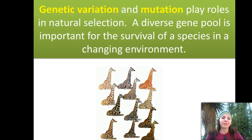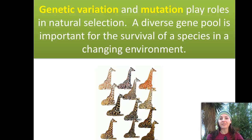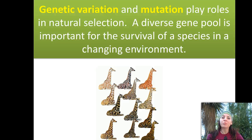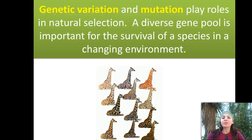First of all, we're going to talk about genetic variation. Genetic variation and mutation play roles in natural selection, and natural selection, if you recall, is the main driving force or the main mechanism of evolution. A diverse gene pool is important for the survival of a species in a changing environment — we want a lot of genes contributed to that gene pool, not just a few traits to pick from. We want green eyes and brown eyes and blue eyes and gray eyes, not just one eye color to pick from.